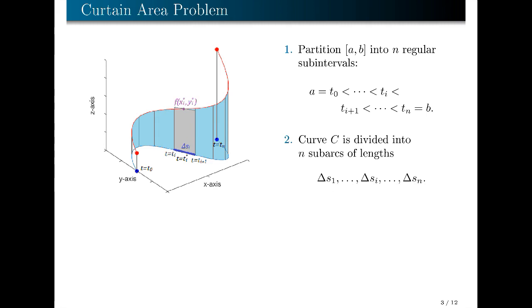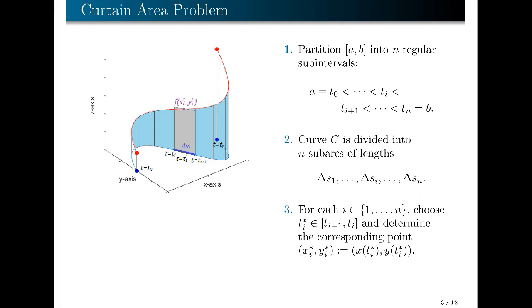The next step is to approximate. Our goal is to find the area of this curtain, and what we want to approximate is the area of the curtain which lies above each sub-arc. To do that, we consider each sub-interval [tᵢ₋₁, tᵢ], i from 1 to n, and choose any arbitrary number tᵢ* in that sub-interval. This tᵢ* will correspond to a point (x(tᵢ*), y(tᵢ*)) on the xy-plane, written as (xᵢ*, yᵢ*). Because the curve c is smooth, this point must lie somewhere between the points corresponding to t = tᵢ and t = tᵢ₊₁.